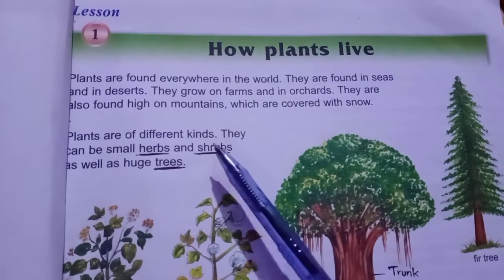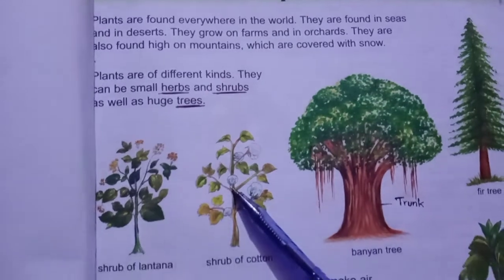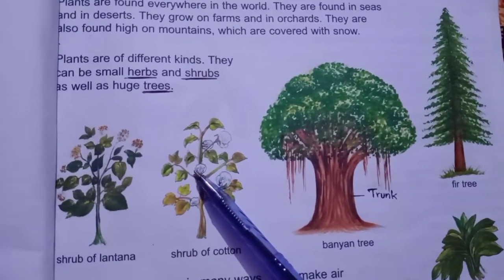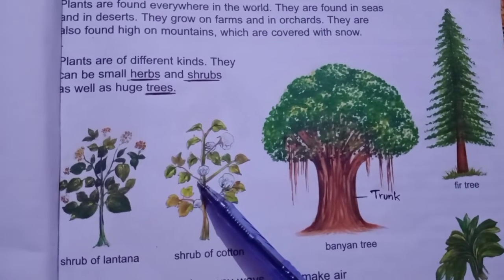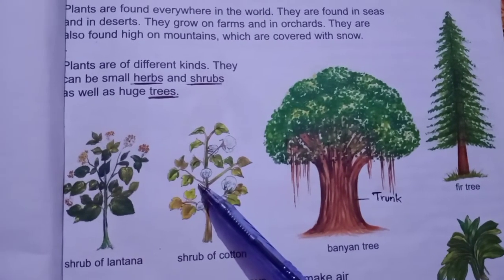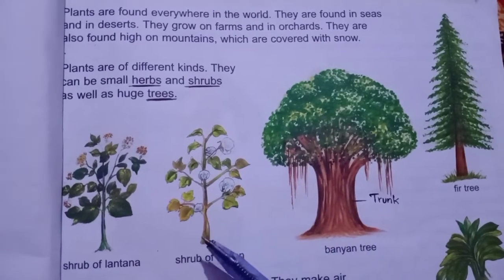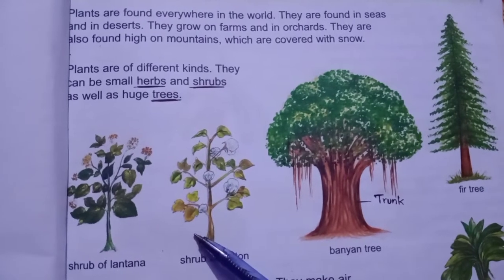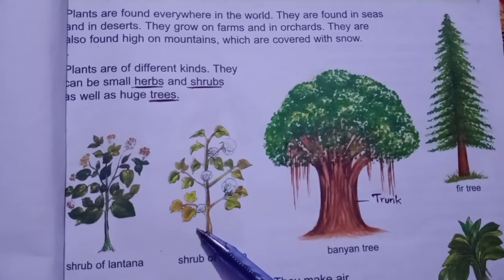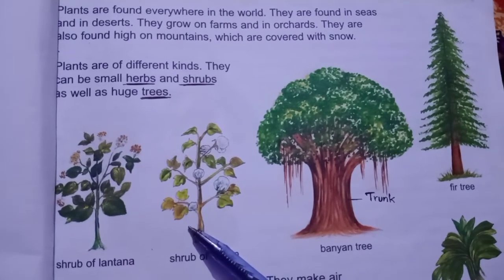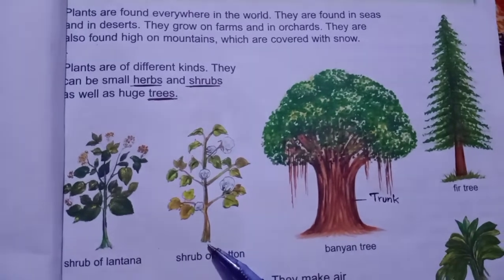Now I am telling you about shrubs. Shrubs are smaller plants than trees. Shrubs وہ plants ہیں جو trees سے چھوٹے ہوتے ہیں۔ They have hard stems — ان کی stems سخت لیکن thin یعنی پتلی ہوتی ہیں as compared to trees. ان کی بھی بہت ساری branches ہوتی ہیں۔ Examples: rose plant, shrub of lantana, and shrub of cotton.